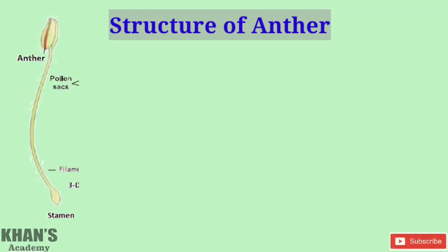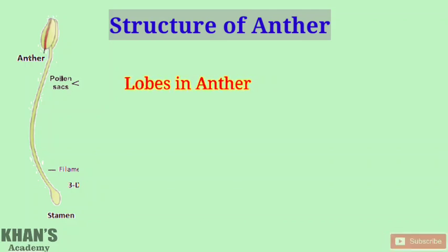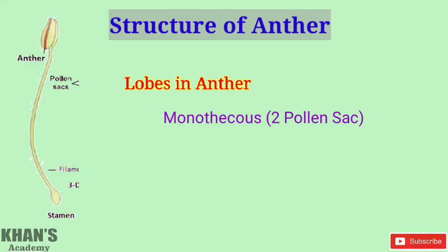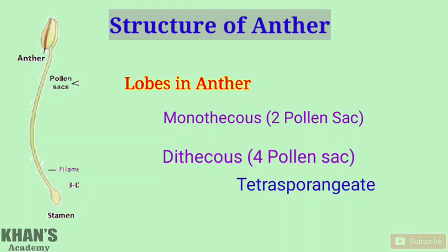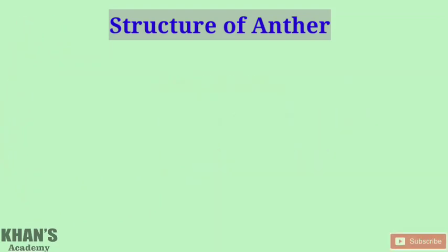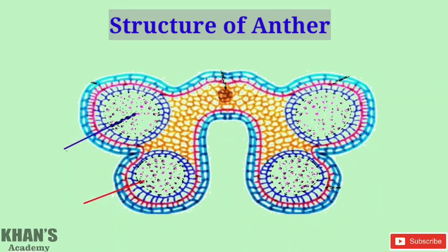First we'll learn about the structure of the anther, which is part of the stamen. On the basis of the number of lobes present, an anther can be monosporangiate — containing two pollen sacs — or dithecous, where the anther contains four pollen sacs. Generally the dithecous type of anther is present in most plants, containing four pollen sacs. This condition is called tetrasporangiate.